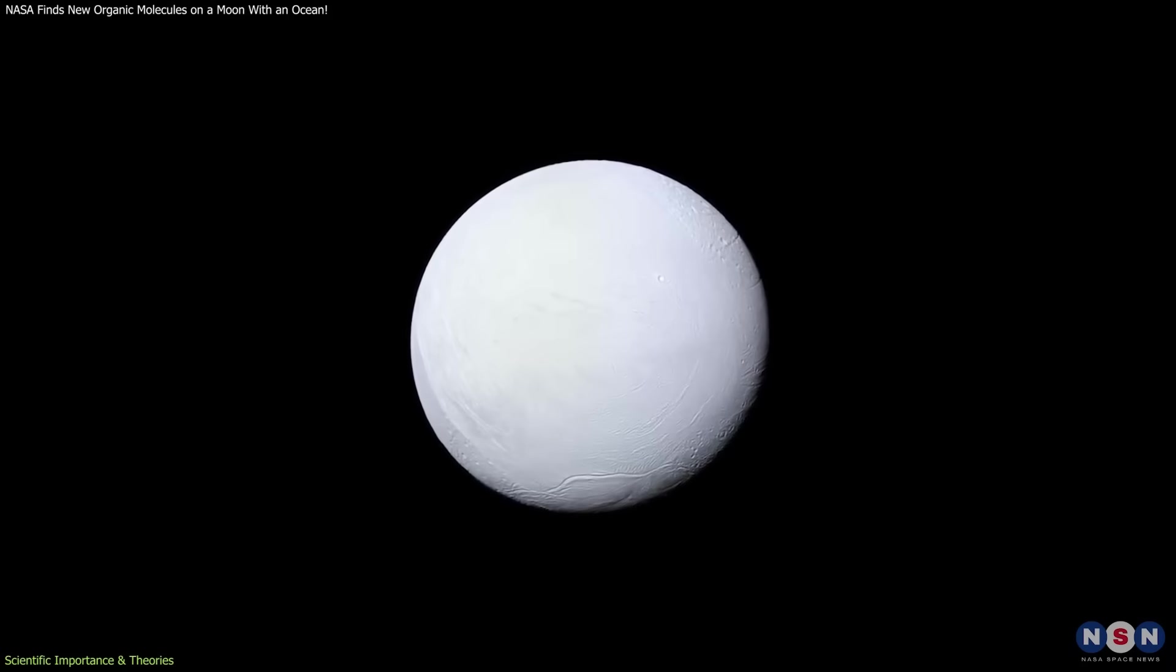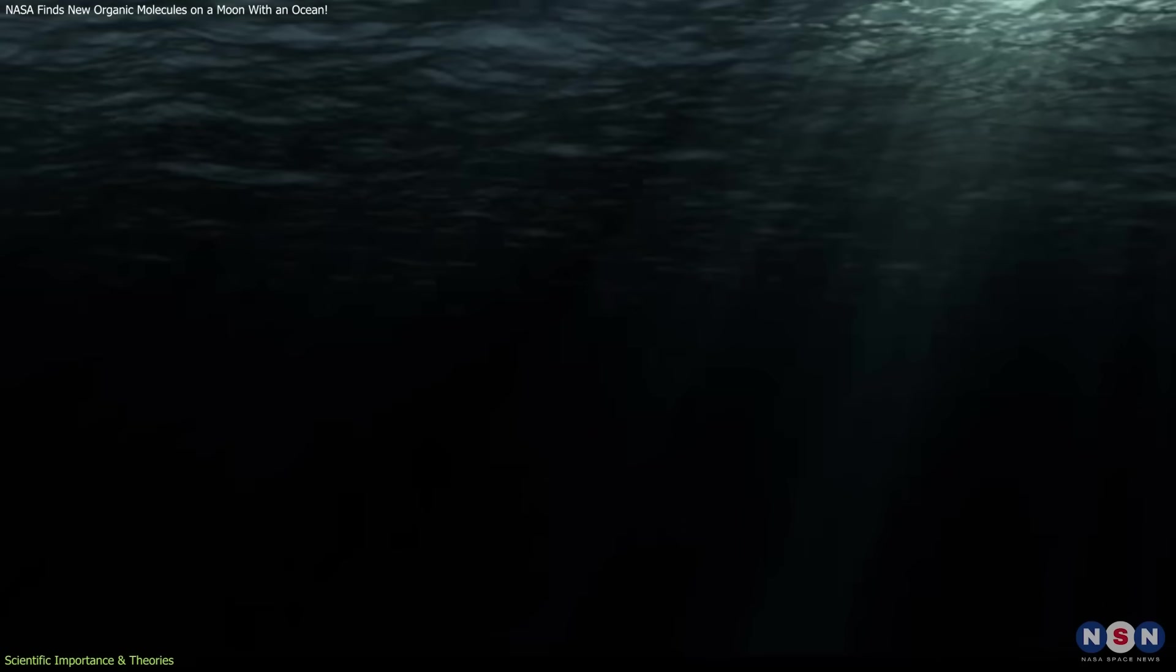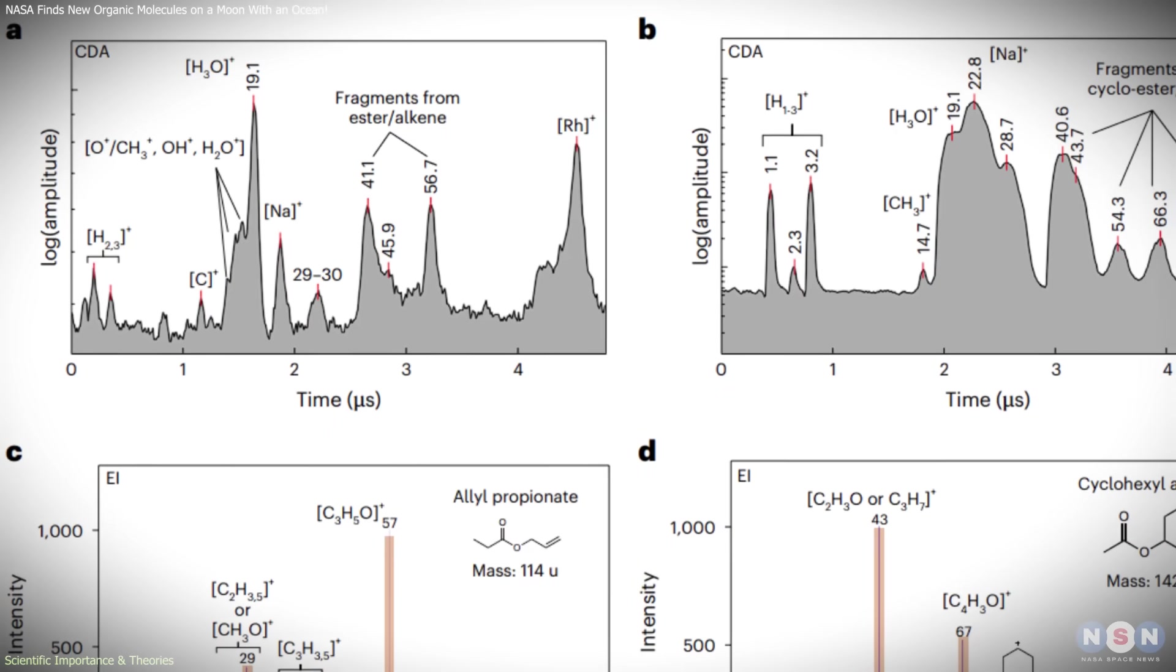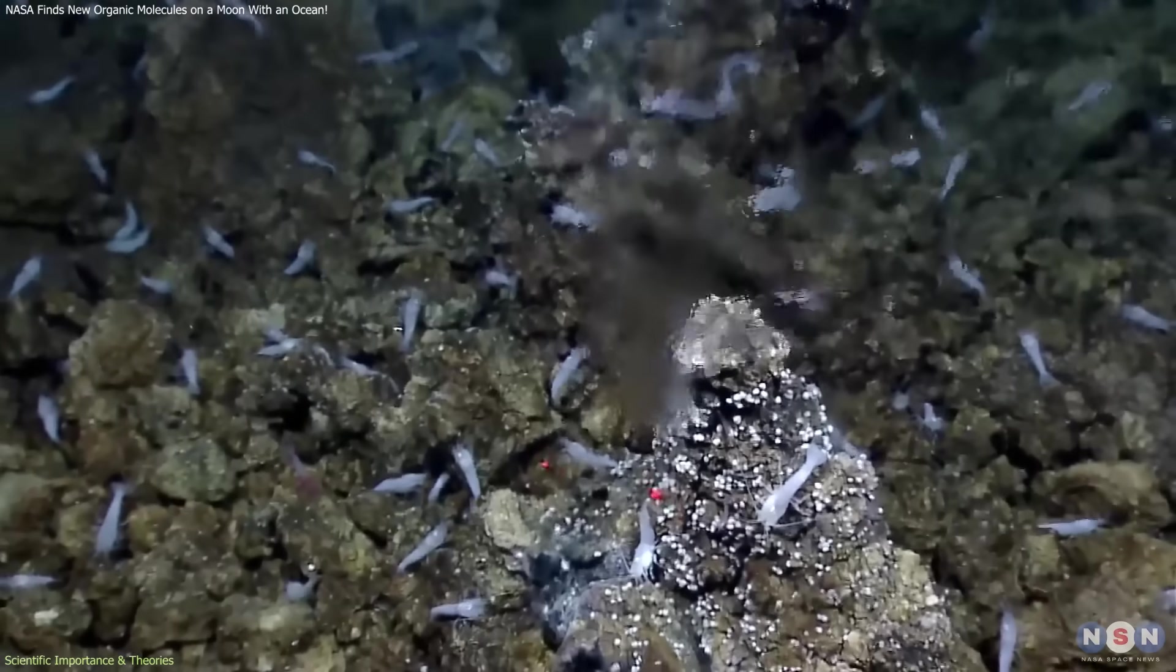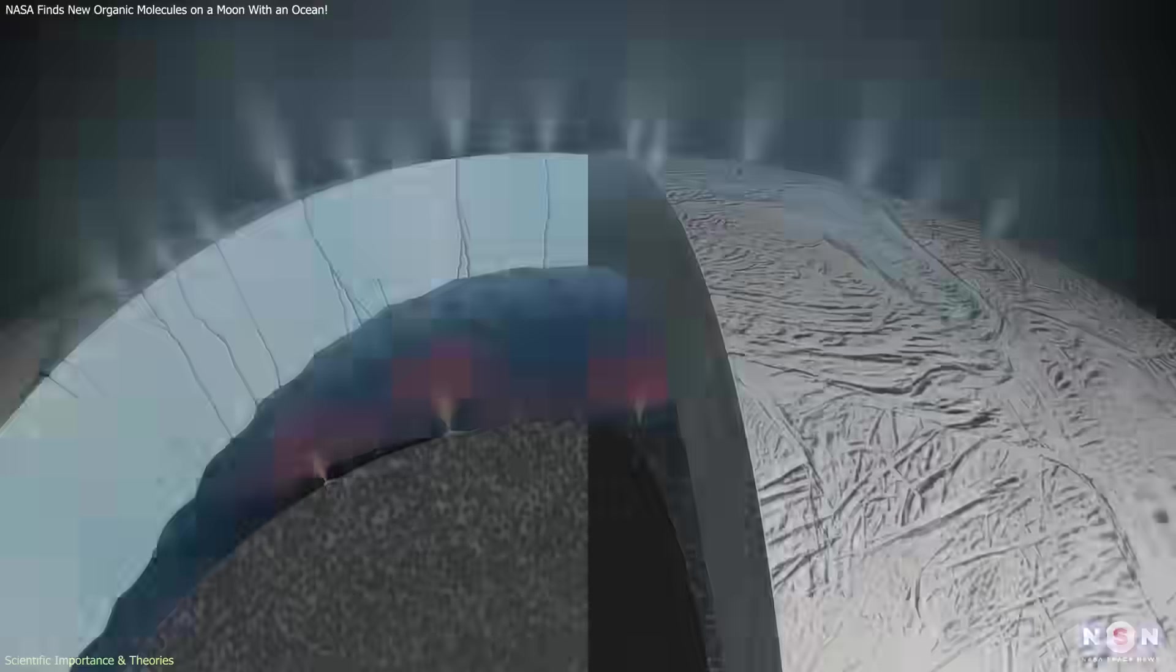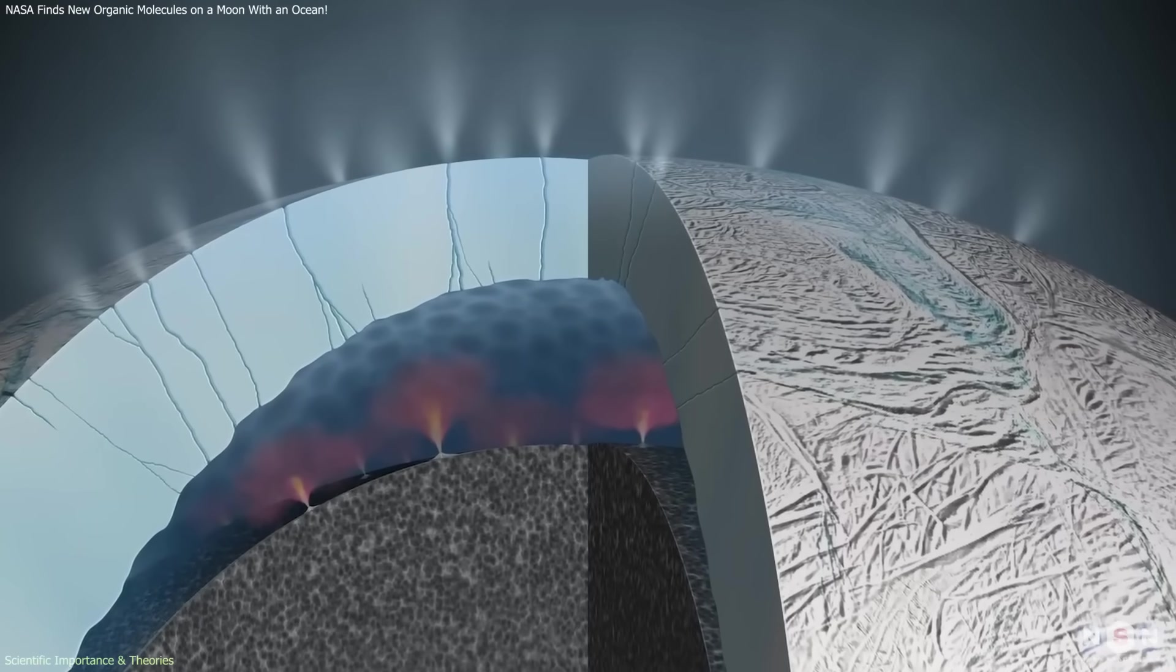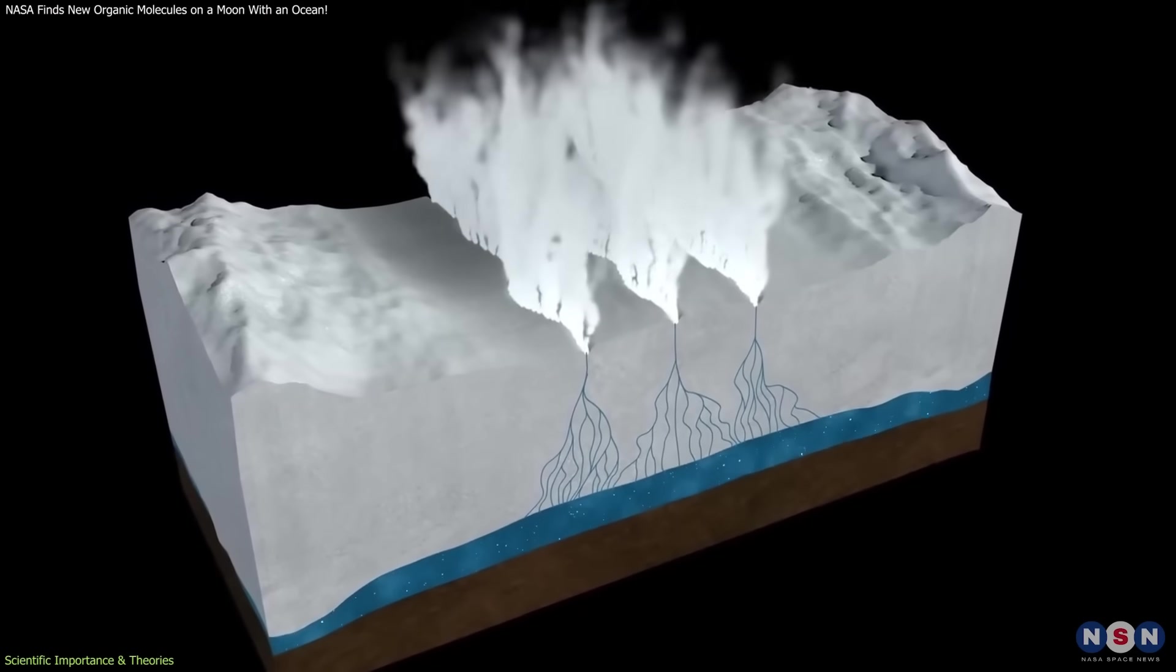Another point of scientific significance is the insight the results offer into ocean dynamics. The distribution of organic compounds suggests that Enceladus's ocean is not uniform. Chemical composition may vary based on proximity to seafloor vents, circulation patterns, or ice-ocean interactions near the crust. This raises new questions about how materials cycle through the ocean, and how frequently plume activity transports them to the surface.